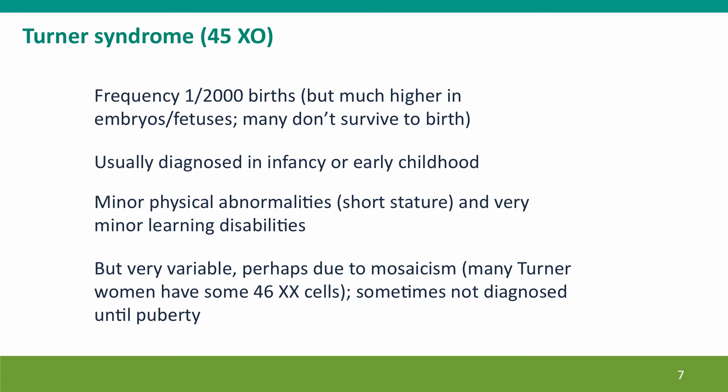Let's consider Turner syndrome. The frequency is about one in two thousand births, but it's much higher in embryos — more than one in a hundred — and most don't survive till birth. It's usually diagnosed in infancy or early childhood because of some characteristic phenotypic differences, which are quite mild: slight wider skin in the neck called webbing of the neck, minor differences in the shape of the hands and position of the ears. The most dramatic physical abnormality is probably short stature. Women with Turner syndrome are usually quite short and have very minor learning disabilities, but all of these features are very variable.